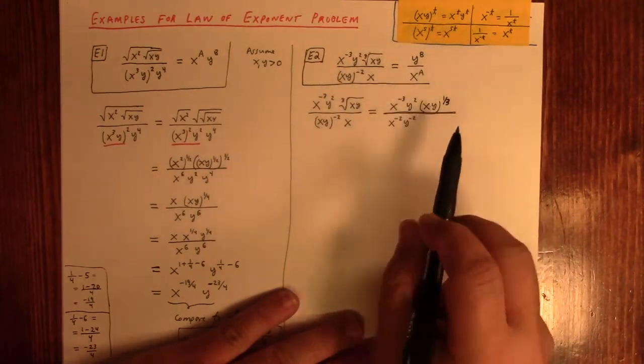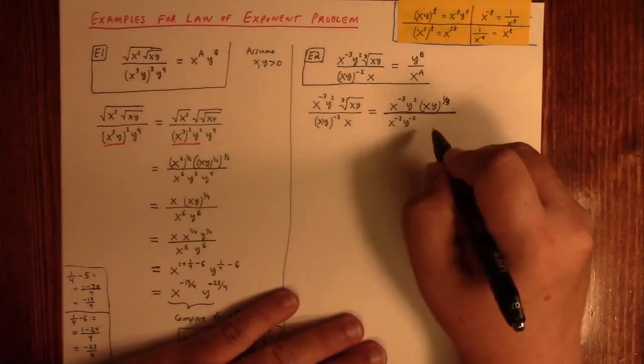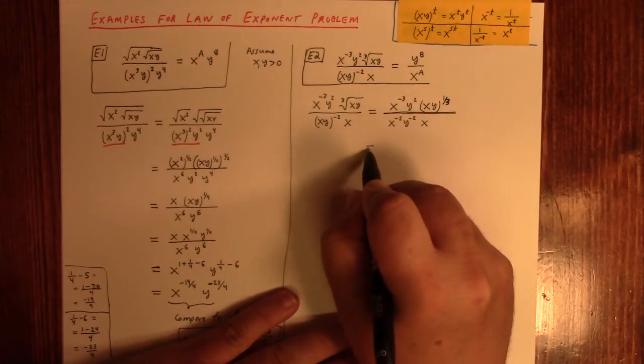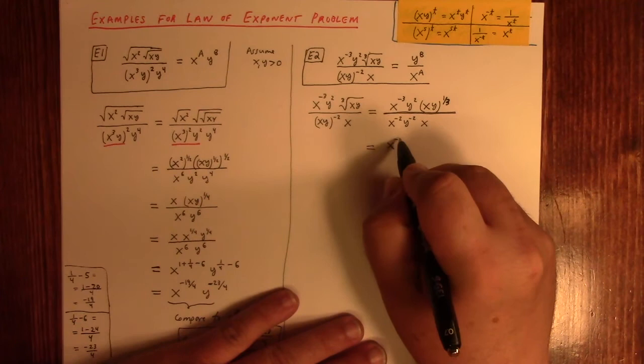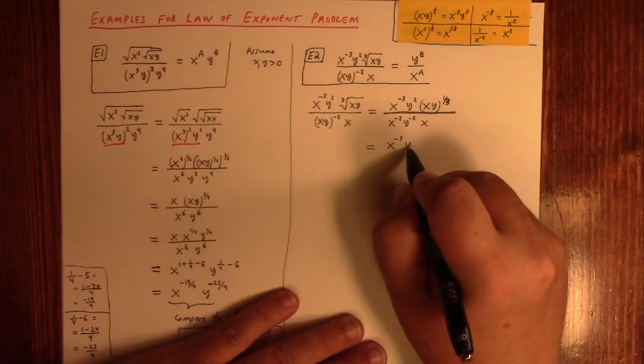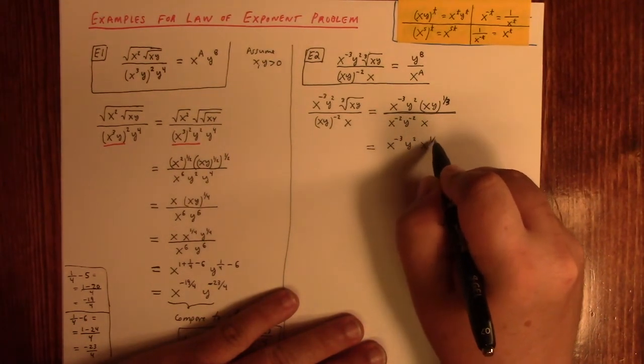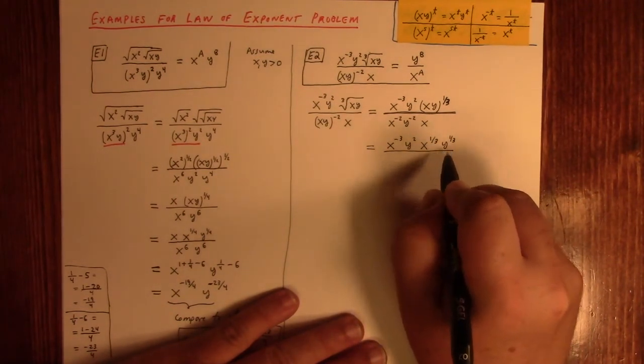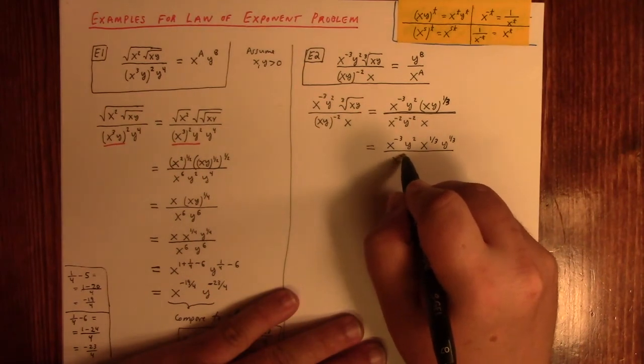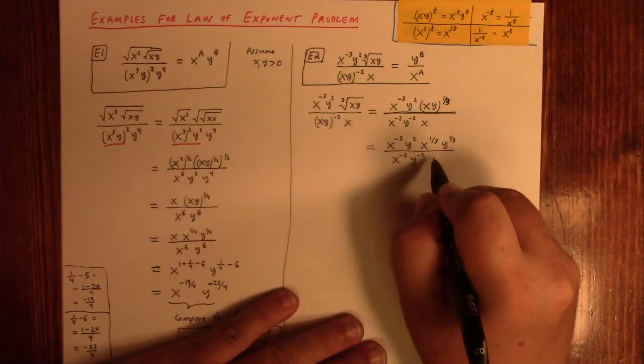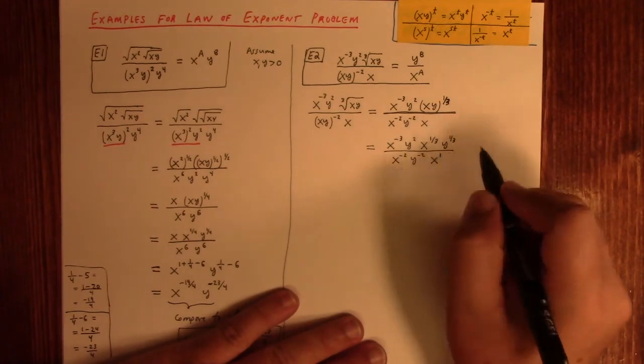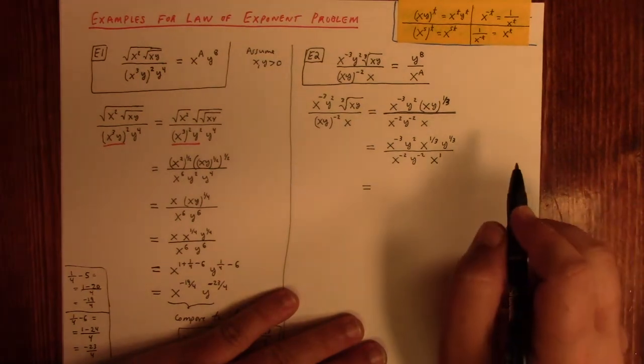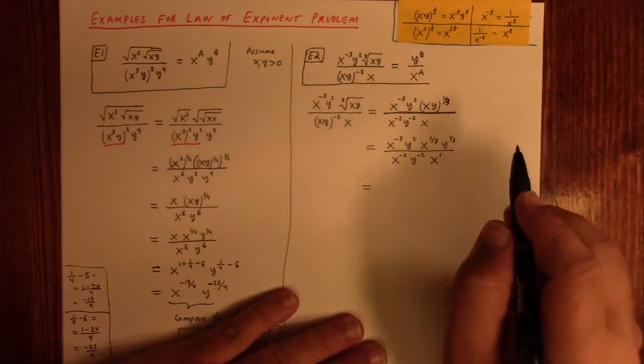So, basically using this x, y to the t, but t is equal to minus 2. And then, of course, I got my x, right? All right. So, what do I got? I've got x to the minus 3, y squared, x to the 1 third, y to the 1 third, x to the minus 2, y to the minus 2, x to the, well, x to the 1, right? And, okay, so, let's look here. What do I have?